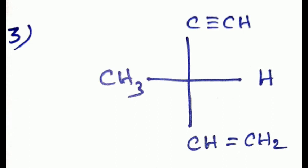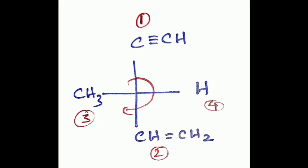Third example: carbon attached to methyl group, alkyne group, alkene group, and hydrogen atom. The alkyne has first priority, then alkene second, then methyl third, and finally hydrogen. After rotating to get the lowest priority horizontal and determining the rotation direction is clockwise, the answer is S configuration or S notation.